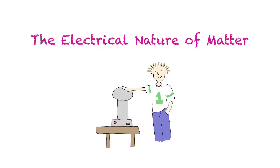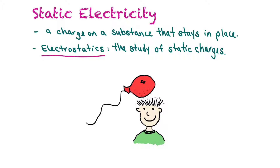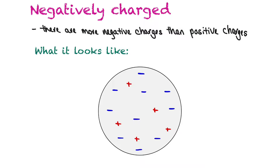In this unit we're going to learn about the movement of electrons to create charges on matter, making matter either positively or negatively charged. Static electricity is when a charge on a substance stays in place — something becomes positively charged and stays that way for an extended period. Electrostatics is the study of static charges. You've probably experienced rubbing a balloon on your head and sticking it somewhere else.